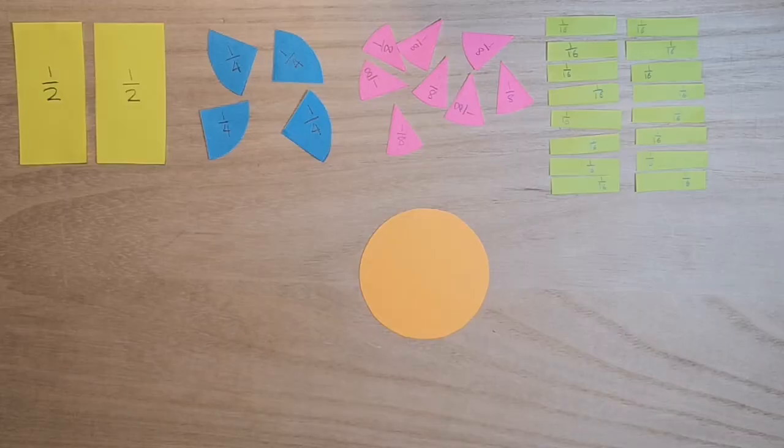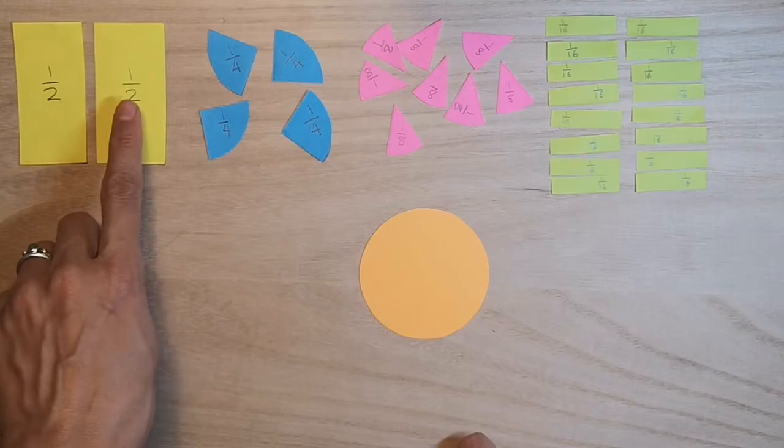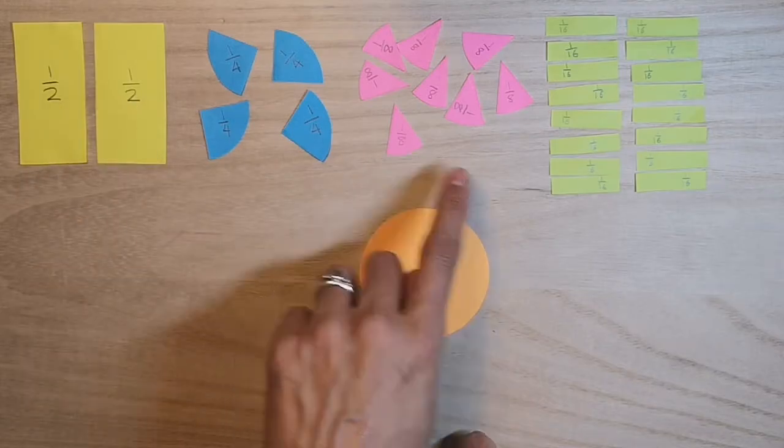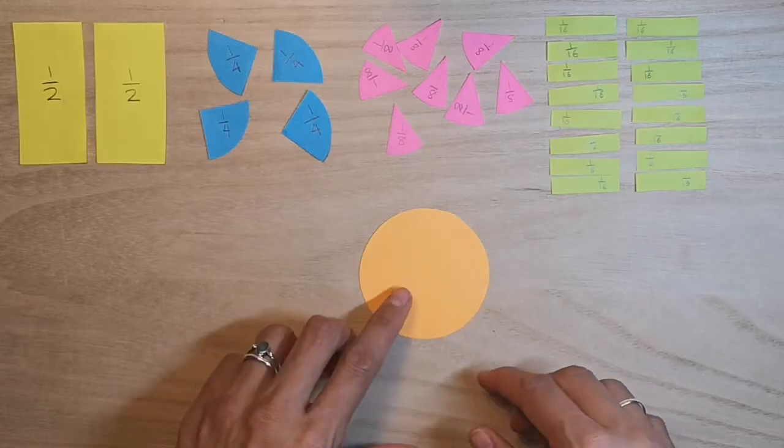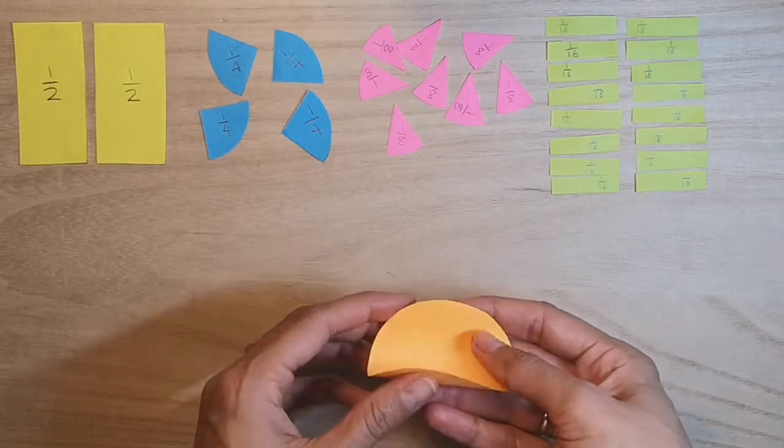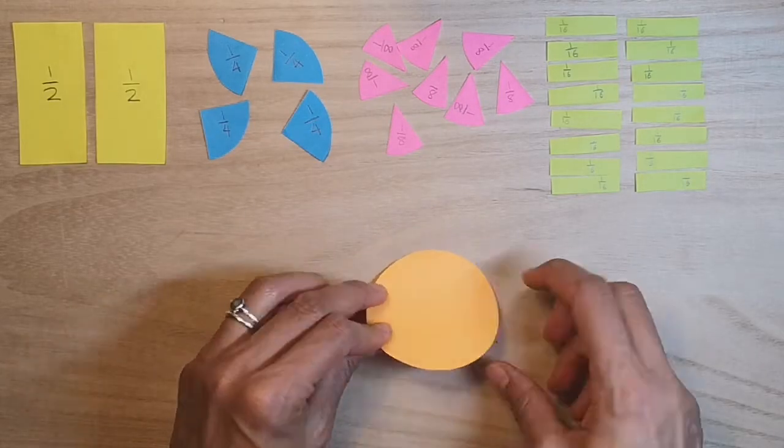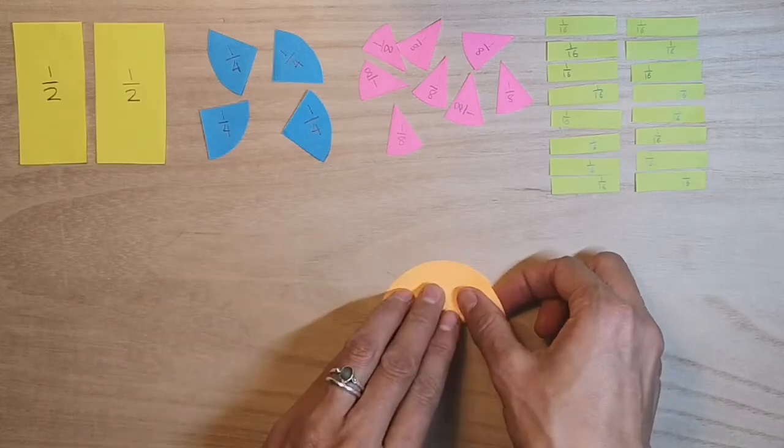So now I'm going to be a bit ambitious. And I'm going to have a go at making a thirty-second. So we've got two, four, eight, sixteen. Double sixteen is thirty-two. That means I've got to fold it quite a few times. So we'll see if this works.